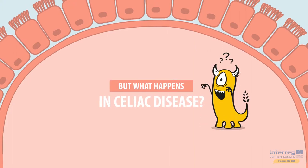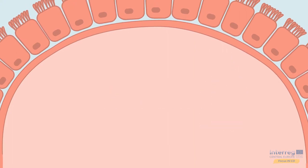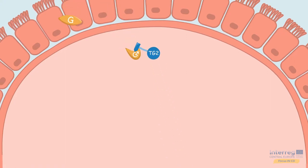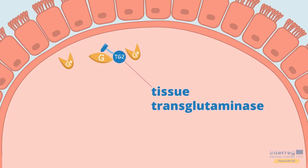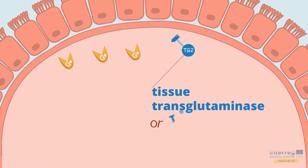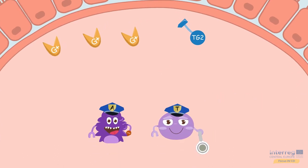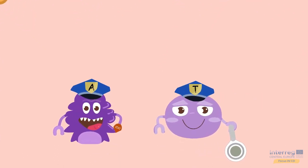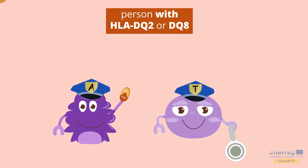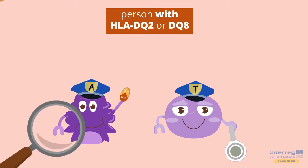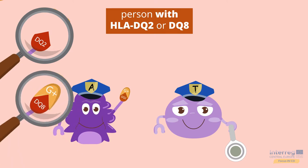But what happens in celiac disease? After being absorbed from the small intestine, the gluten fragment is further modified by an enzyme called tissue transglutaminase, or TG2. And here is where the genes play a role. In a person who carries the celiac genes HLA-DQ2 or DQ8, the tiny arms of the antigen-presenting cells have a certain shape. The modified gluten fragment fits into this HLA shape like a key into a lock.